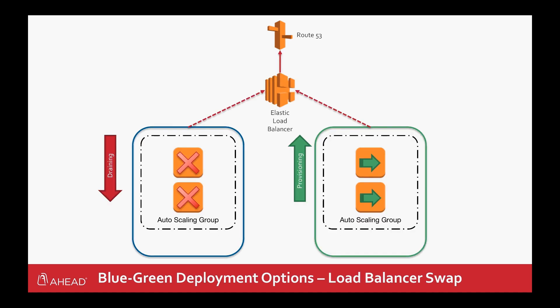The second method is to do a load balancer swap, basically swapping our auto scaling groups behind the load balancer. We have the existing auto scaling group for blue that we drain out, and as we do that, we bring up the auto scaling group in green and provision instances with the new code base. Once that drain and provisioning is complete, the swap happens at the load balancer level and nothing changes on DNS — a much faster way to do things.